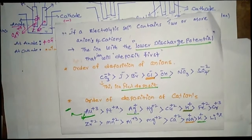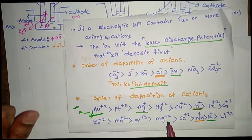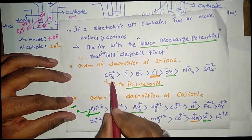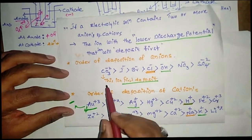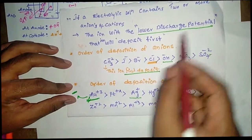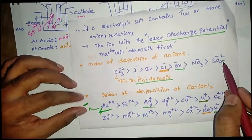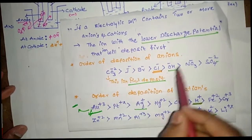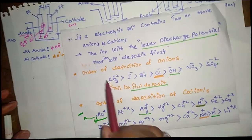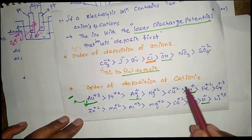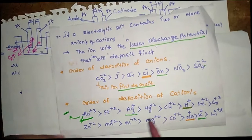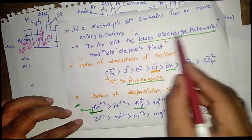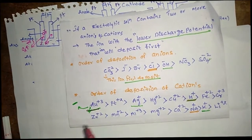I will now show the lower discharge potential series for anions and cations. For the order of deposition of anions: carbonate ion is deposited first, as it has the lowest discharge potential. Sulfate has a high discharge potential, so it is not deposited first. For cations: Rh³⁺ has the lowest discharge potential and is first deposited at the cathode, while lithium has the highest discharge potential.